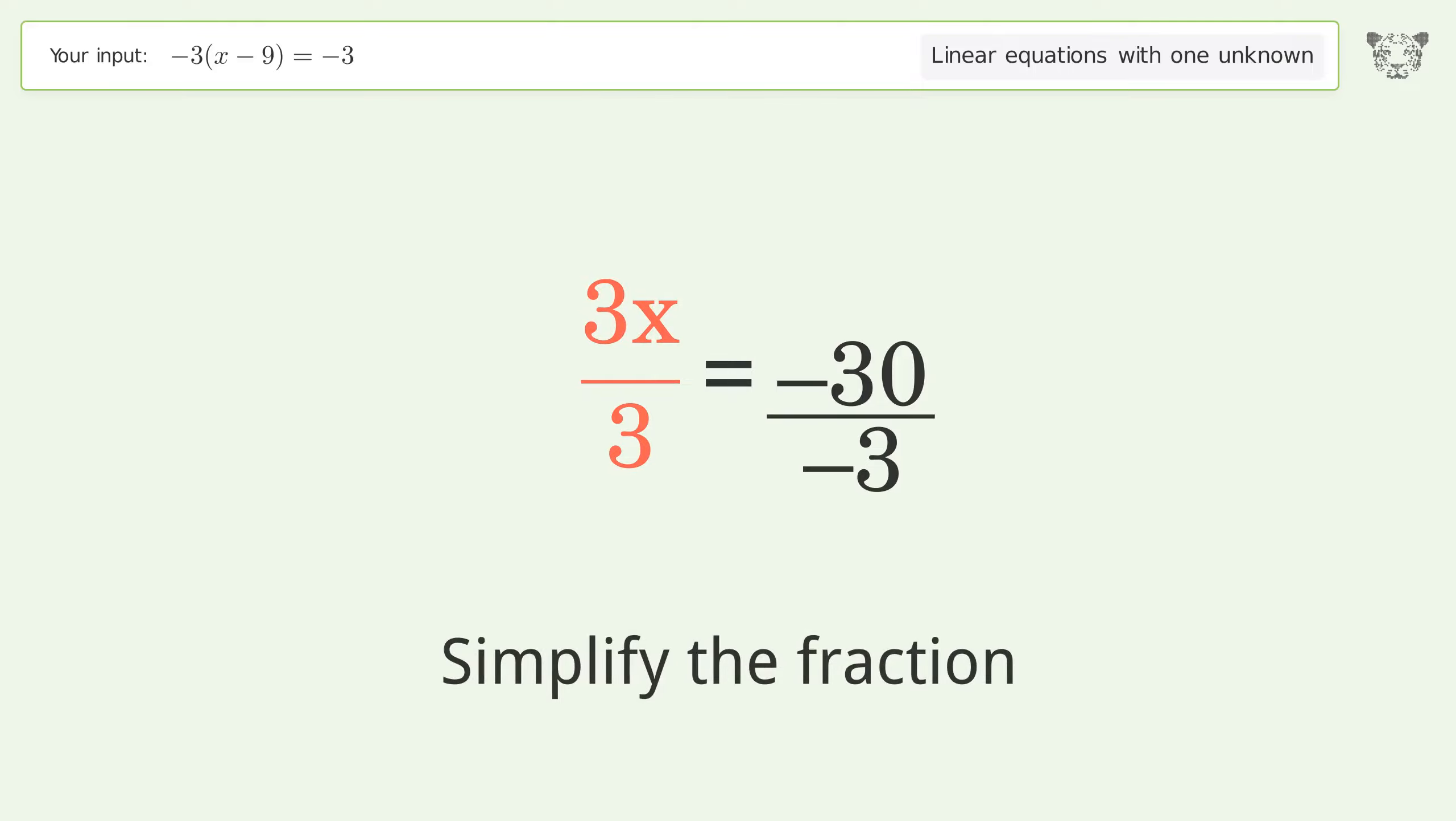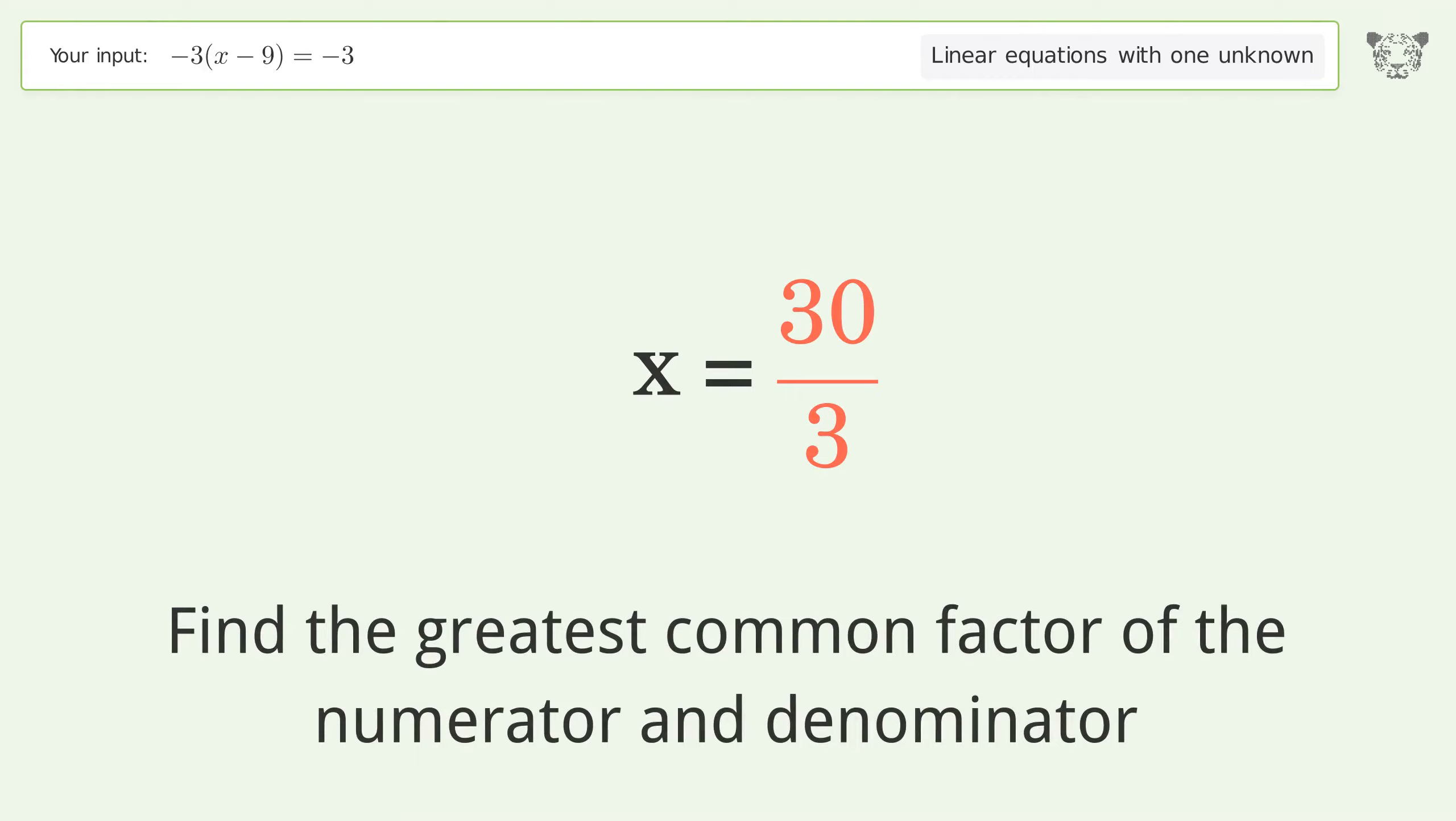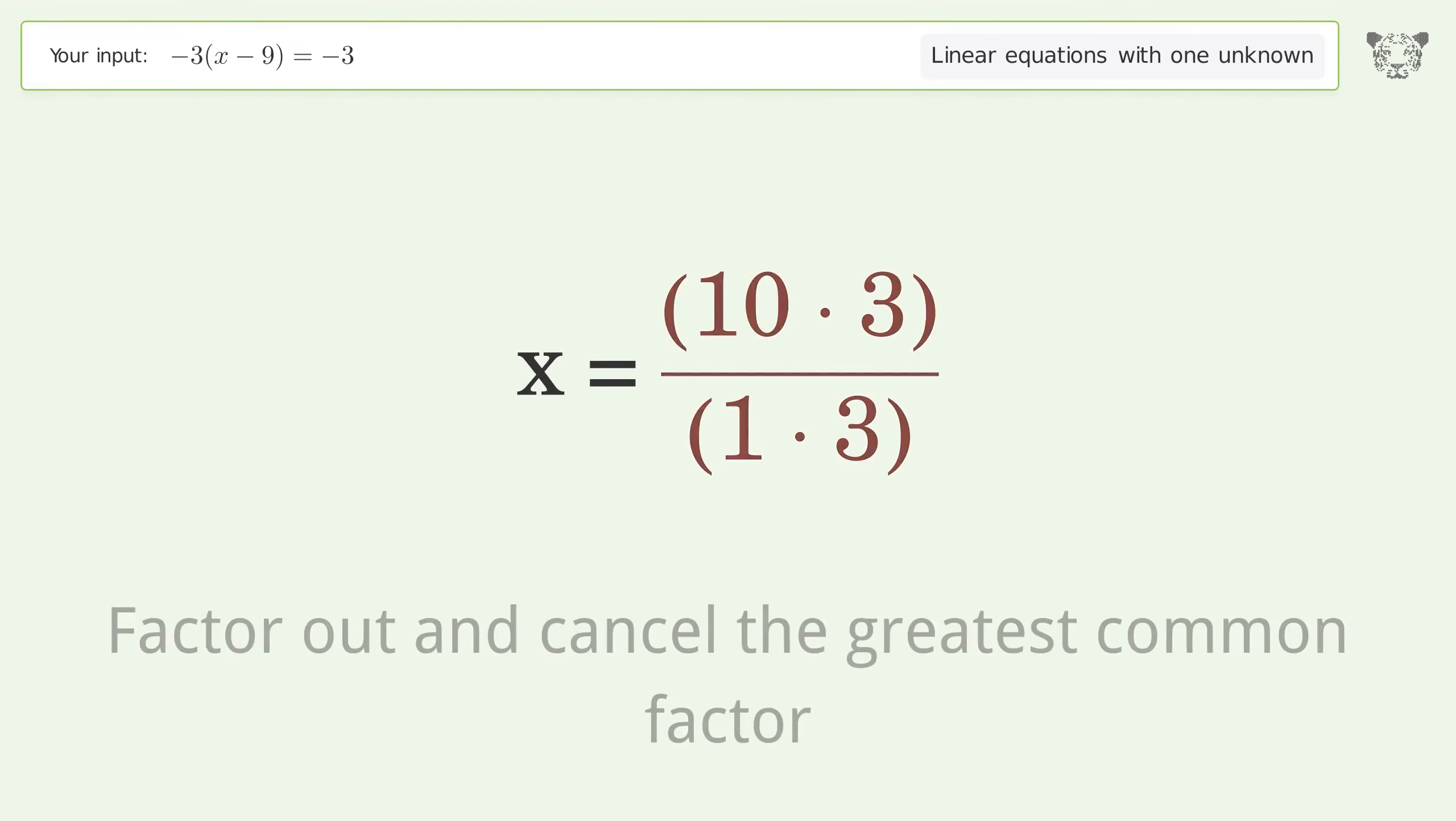Simplify the fraction. Cancel out the negatives. Find the greatest common factor of the numerator and denominator. Factor out and cancel the greatest common factor.